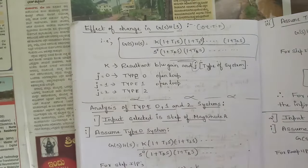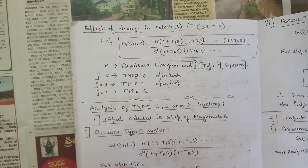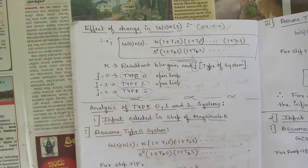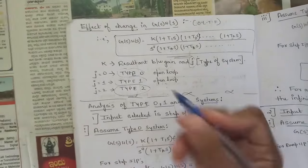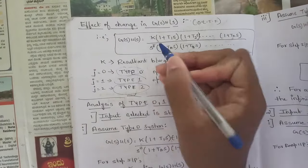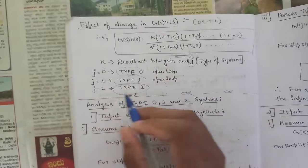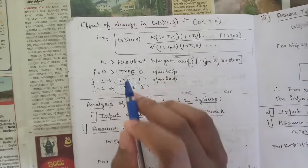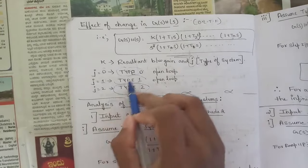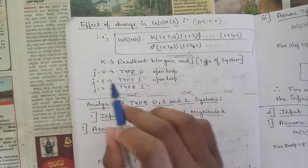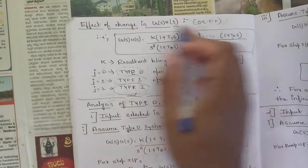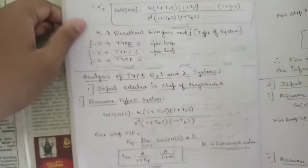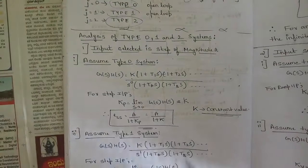There are three main types of open loop transfer function systems: Type 0, Type 1, and Type 2. In the general formula, j determines the type. When j = 0, the system is Type 0; when j = 1, it is Type 1; and when j = 2, it is Type 2. Let's now get into the analysis of Type 0, Type 1, and Type 2 systems.